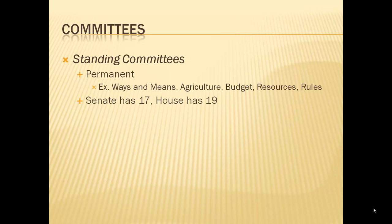The Senate has 17 standing committees and the House has 19. This is a tip-off for understanding the difference between the two houses of Congress. The House has two more committees than the Senate, and one of the reasons is that every bill dealing with money — every bill dealing with apportionment, in other words how we take in or spend money — has to start in the House of Representatives. So they have to deal with a couple of issues the Senate won't.